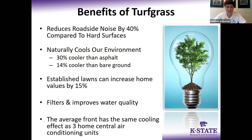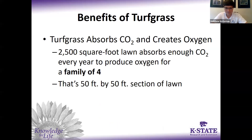The average front lawn has the same cooling effect as three central air conditioning units for an average house. That's pretty cool — even just a small front lawn can have the cooling effect equivalent to three central AC units. One of the biggest reasons tall fescue and lawns in general are important is the amount of carbon dioxide they sequester through photosynthesis and the amount of oxygen they create. It only takes 2,500 square feet of lawn — just a 50 by 50 foot section — to create enough oxygen for a family of four.